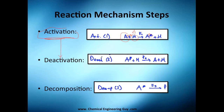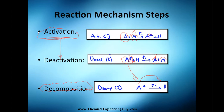Next comes deactivation. This activated species collides with another molecule; both are relatively high in energy but not enough to be excited. Eventually, decomposition occurs and the intermediate forms the product. So just learn: activation, deactivation, decomposition.